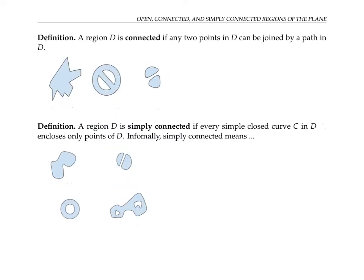A region D is called connected if any two points in D can be joined by a path in D. For example, this region on the left is connected because any two points in D can be connected by a path that lies entirely in D. The next region is also connected — if I pick any two points, I can always get from one to the other by a path that lies entirely in D. In fact, there may be several such paths.